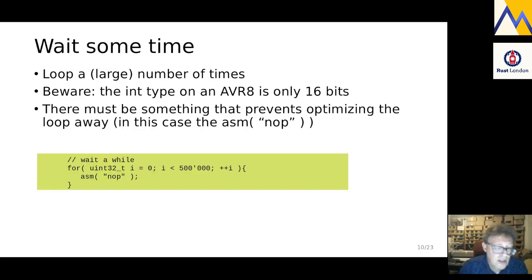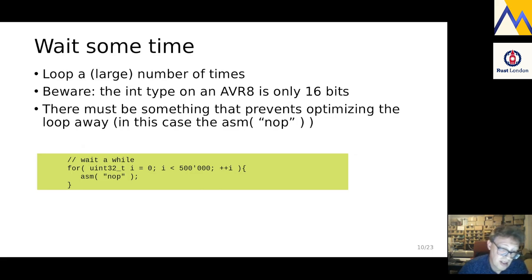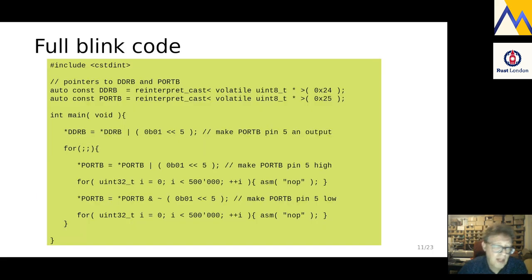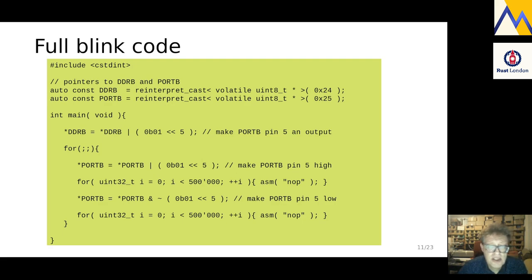We also need a delay in between, because otherwise we make the LED blink too fast and it appears to be only half on. A long loop works, but we must put something inside it, otherwise the optimizer will throw the whole loop out — looping a very large number of times doing nothing is the same as doing nothing to a clever compiler. So there's an assembler instruction `nop` inside to prevent that optimization. Combining all of this, we have a simple blink program: the two pointers at top, a line setting DDRB to make the pin an output, and then the forever for loop that handles the blinking.